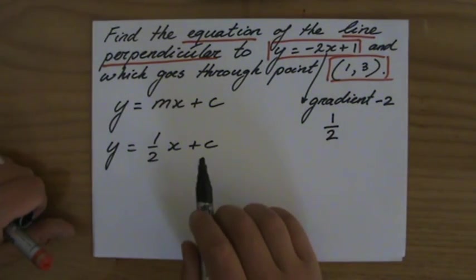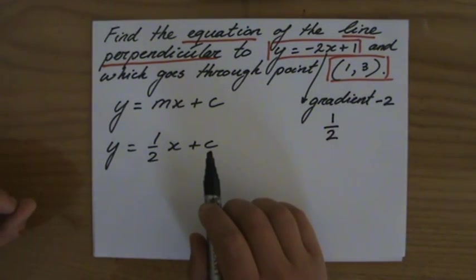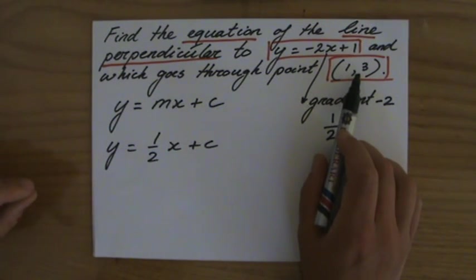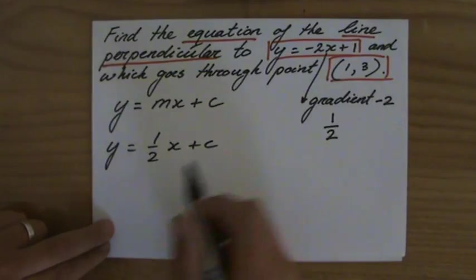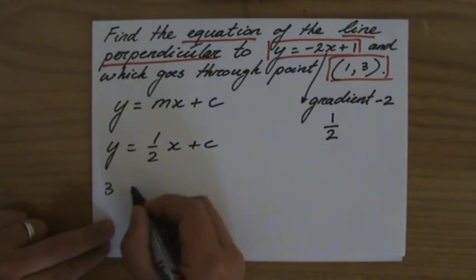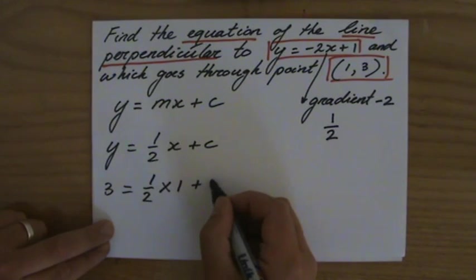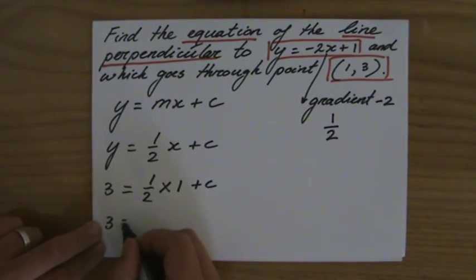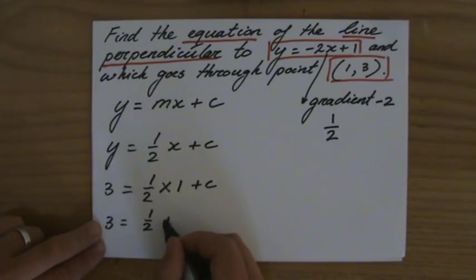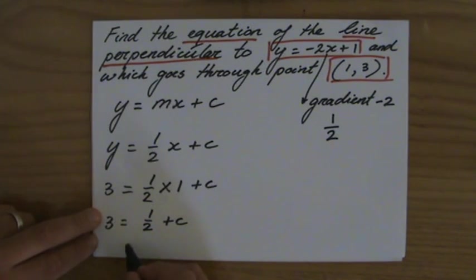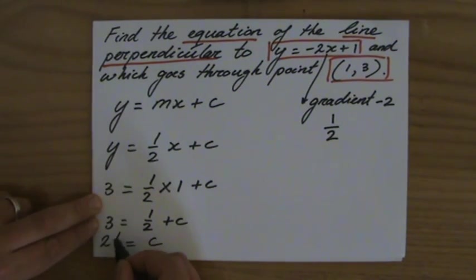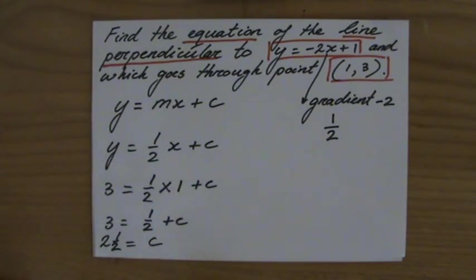Now we're going to find the y-intercept. We substitute that one point they give us to find c. Because when x is 1, y is 3. So 3 equals a half plus c, and c is 2 and a half. Take away a half on both sides.